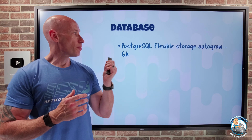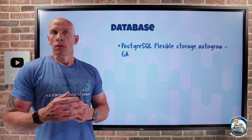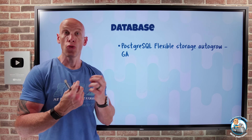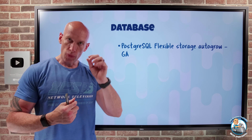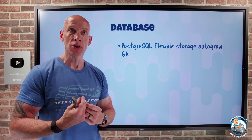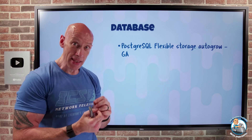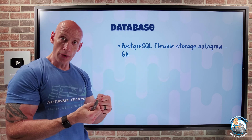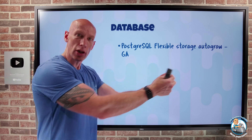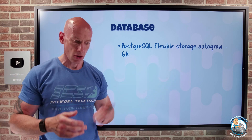On the database side, PostgreSQL Flexible storage auto-grow is now GA. As the name suggests, as you use more data, it will automatically grow the storage to avoid running out and causing problems. It works for both the primary and replicas — replicas need to keep up to avoid integrity issues. When enabling this, turn it on for the replicas first, then the primaries, to ensure the primary doesn't start growing before the replicas can accommodate.